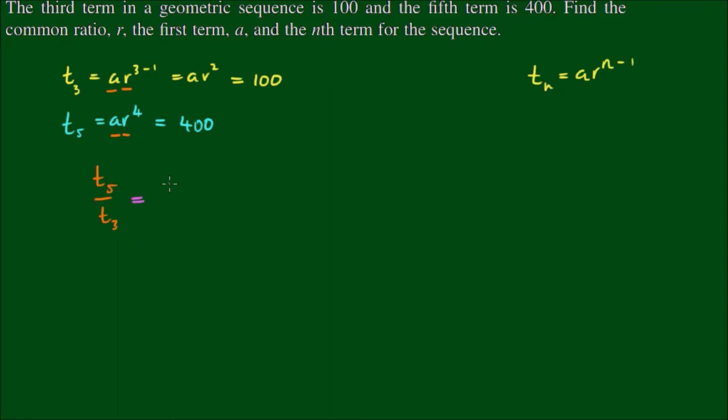So we have ar to the power of 4 divided by ar squared which equals 400 over 100. Let's just consider this part of the equation.